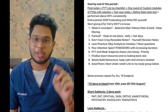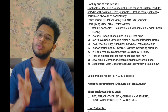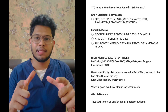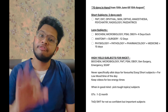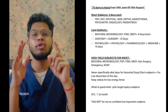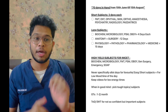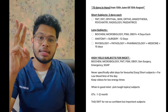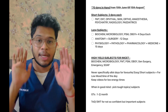You have to repeat the same process for all 19 subjects — start with the subjects which are heavily asked down to the least important. Now, how to divide these 70 days per subject: for short subjects, you can give three days each. In those three days you have to get your final notes ready. Short subjects here include FMT, ENT, Ophthalmology, Skin, Ortho, Anesthesia, Psychiatry, Radiology, and Pediatrics.